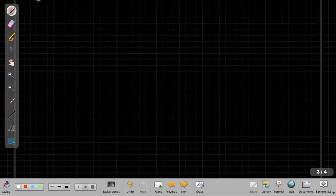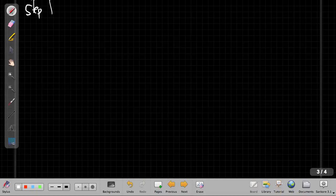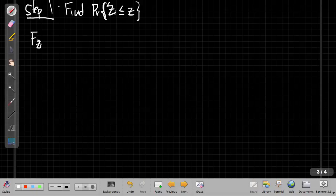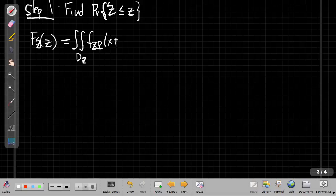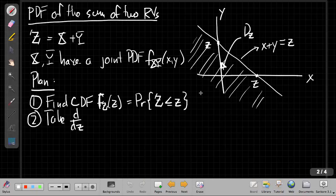For step one, we want to find the probability that capital Z is less than or equal to some outcome little z. That's the definition of our CDF. We're going to take the double integral over the region D_z of my joint PDF. That's one of the fundamental properties of the joint PDF: I can find the probability of any event by integrating the PDF over the region of all outcomes in that event.